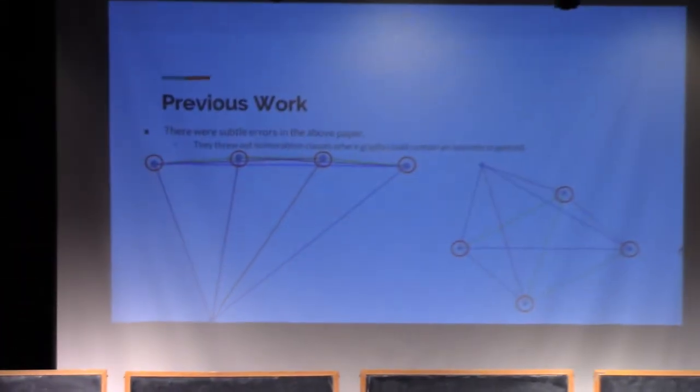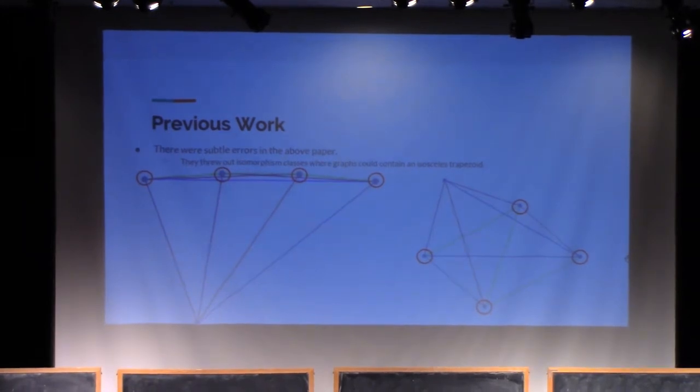There was a subtle error in their work where they threw out isomorphism classes where graphs could contain an isosceles trapezoid. The logic there being that isosceles trapezoids are always inscribable on circles, and so if they had an isosceles trapezoid, they couldn't be in general position. However,